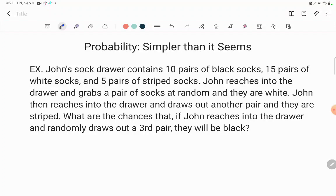Okay, all that being said, let's go ahead and tackle this problem. Let's just read through it first. As we read through, what we're really doing is looking for what we're supposed to do. John's sock drawer contains 10 pairs of black socks, 15 pairs of white socks, and 5 pairs of striped socks. John reaches into the drawer and grabs a pair of socks at random and they are white. John then reaches into the drawer and draws out another pair and they are striped.